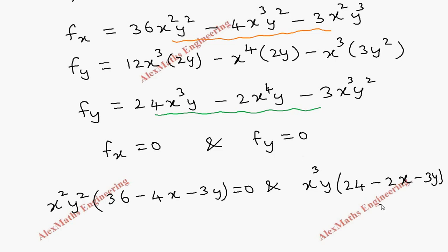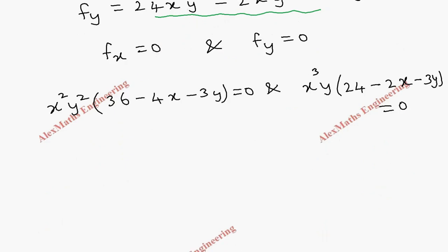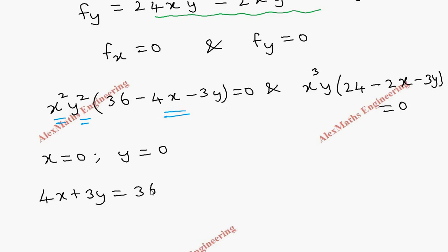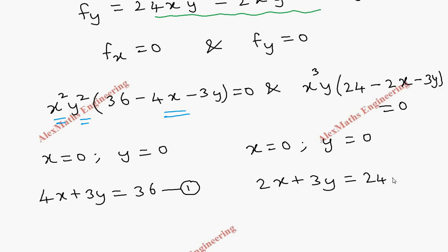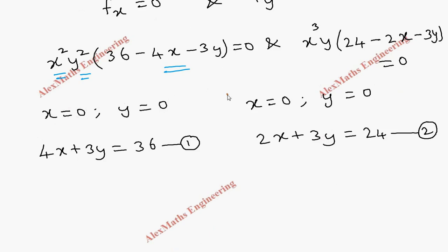Equating individual factors to zero: x² = 0 gives x = 0, and y² = 0 gives y = 0. The other factor gives 4x + 3y = 36 — this is equation 1. From fy: x³ = 0 gives x = 0, y = 0, and the other factor gives 2x + 3y = 24 — this is equation 2.